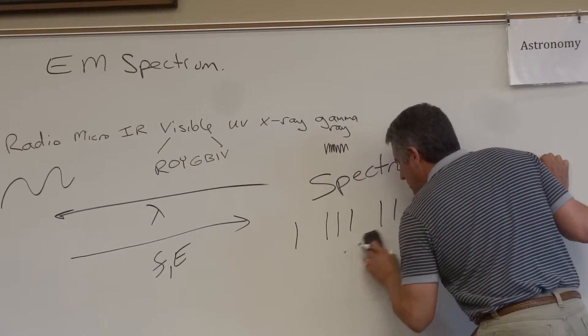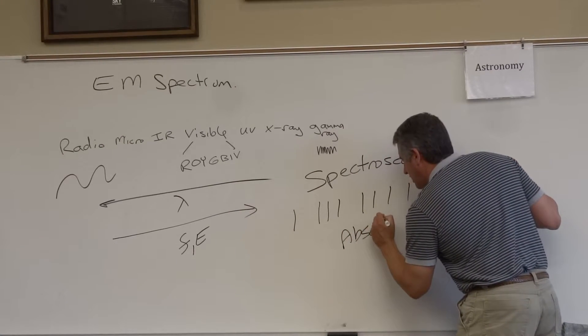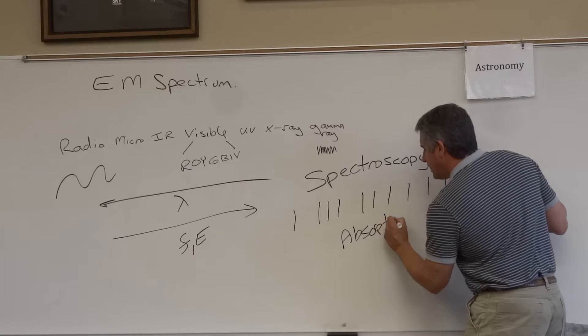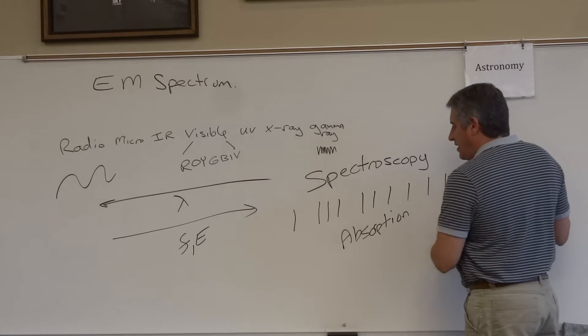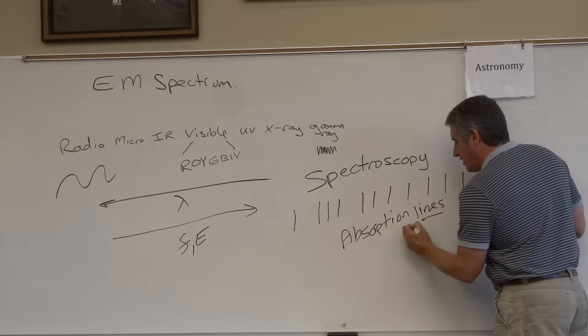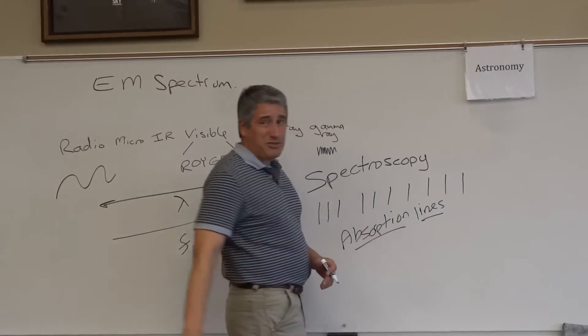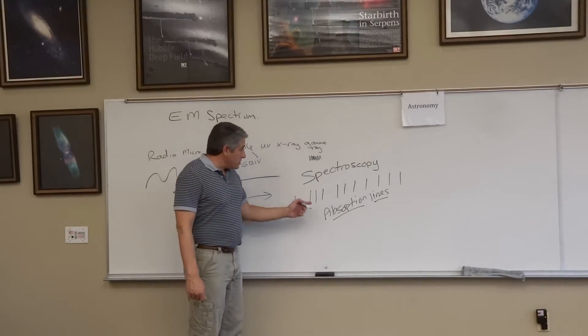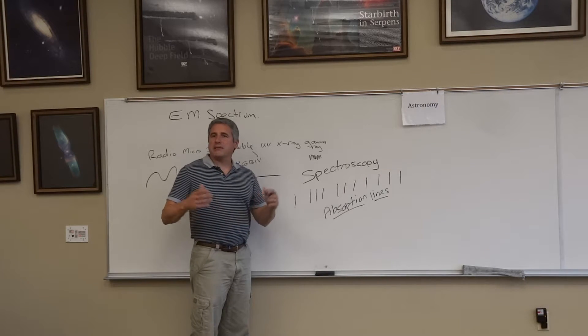Absorption lines. So these absorption lines, A-B-S-O-R-P-T-I-O-N, absorption lines are dark lines in the spectrum of the Sun. And they catch our attention because they seem to come in patterns. In fact, when you look at these absorption lines, you start to get the sense that you're looking at something like a barcode.